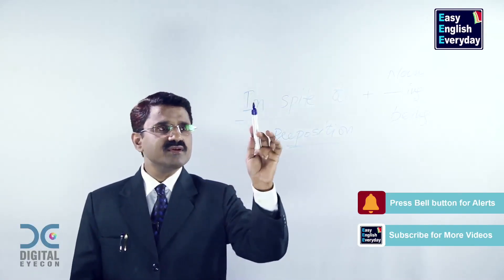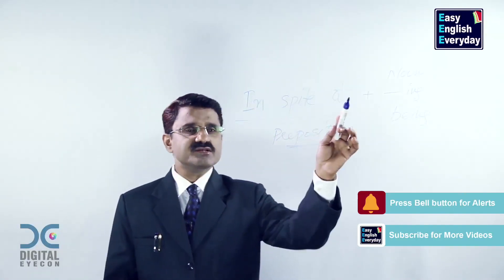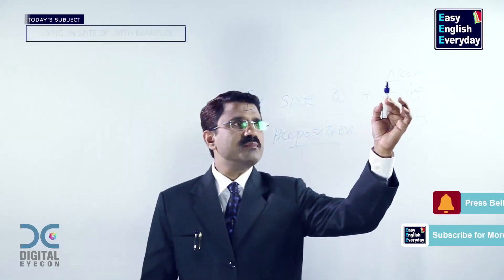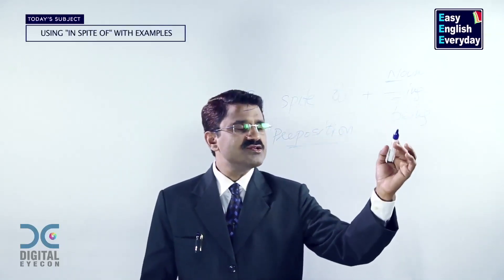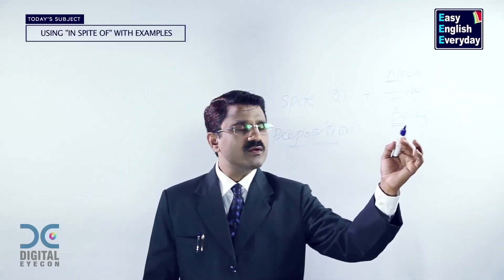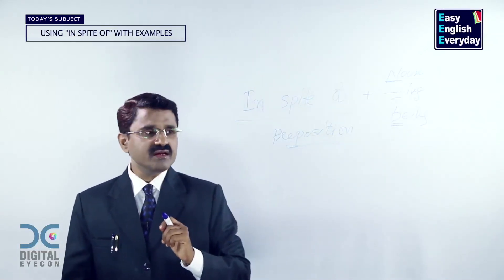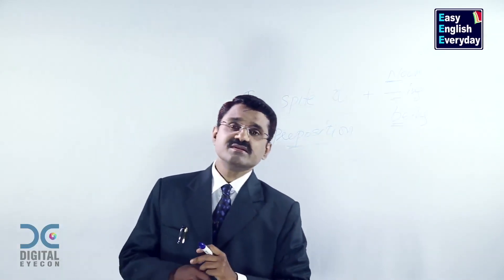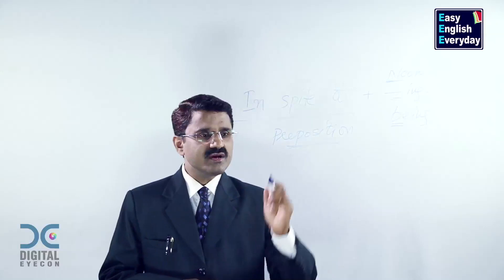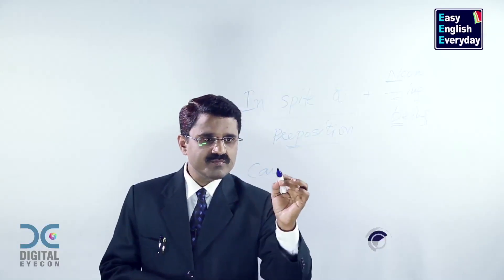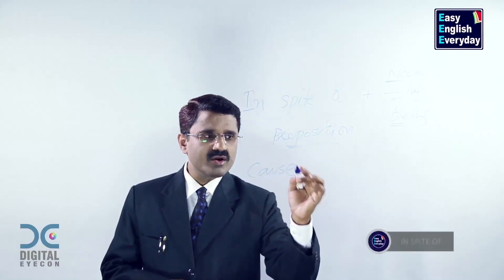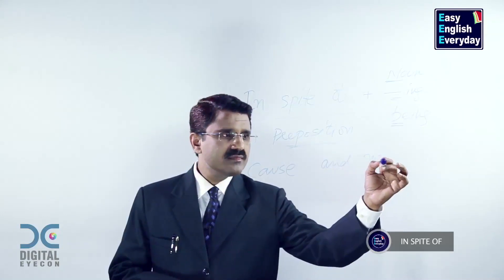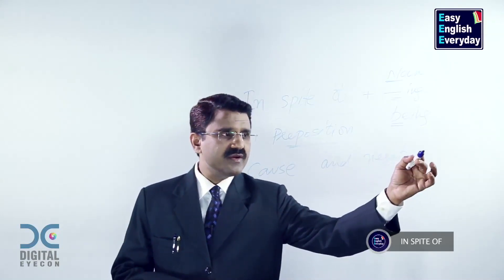How to make an example? Take 'in spite of', and to the right side keep a noun, or ing, or being. Then start making examples. And where should you use such sentences? When you are talking about cause and negative effect.